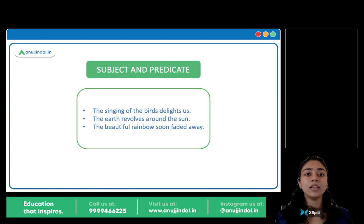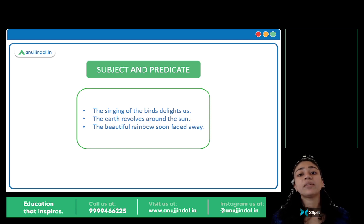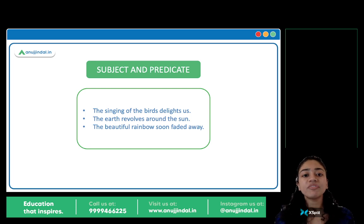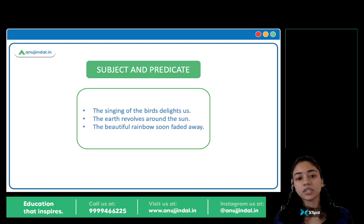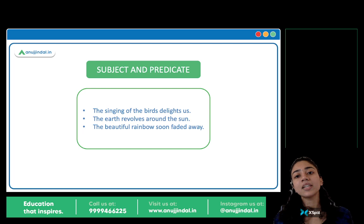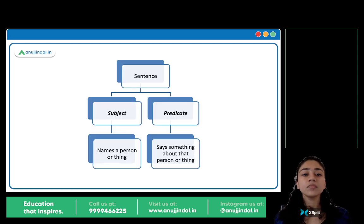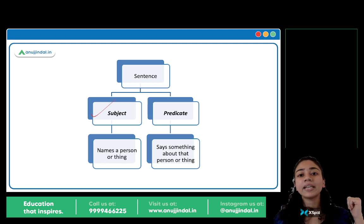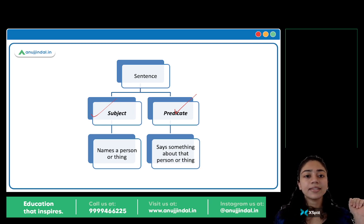I hope this part is clear. Now, moving on to subject and predicate — a very basic but very important concept in grammar. You have three sentences in front of you: 'The singing of the birds delights us,' 'The earth revolves around the sun,' 'The beautiful rainbow soon faded away.' Every sentence is divided into two parts — there is a subject and there is a predicate. But what is the subject? What is the predicate? Let's see.